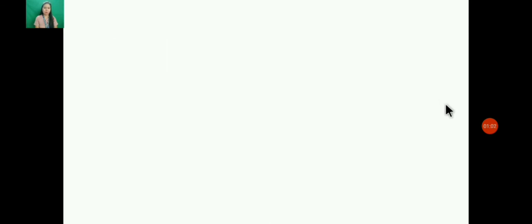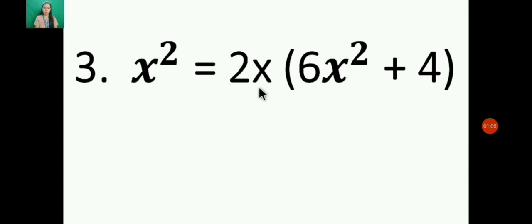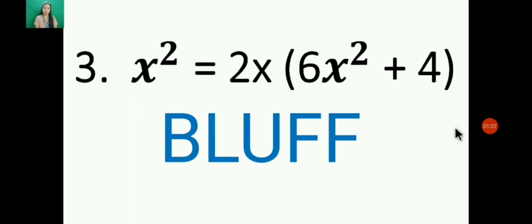Number 3: x² = 2x(6x² + 4). Is it Fact or Bluff? The correct answer is Bluff. Why? By means of the distributive property, if we multiply 2x by 6x², the outcome will be 12x³. The highest degree of exponent of this equation is now 3, which is not a quadratic equation.